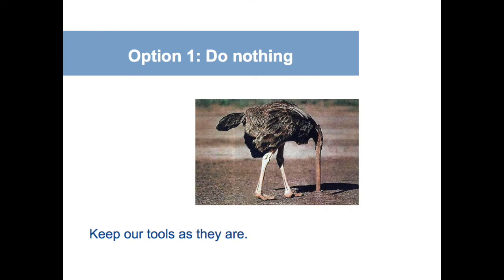Option one: do nothing, keep our tools as they are. If it's not broke, don't fix it - any changes will break someone's workflow. We don't think this is an option. Throughout research, throughout all the issue queues, people experimenting with other options, people who've moved their stuff elsewhere, people using Hubdrop to mirror projects on GitHub to avoid Drupal's Git - people are definitely looking for other options because they're not happy with what they have.